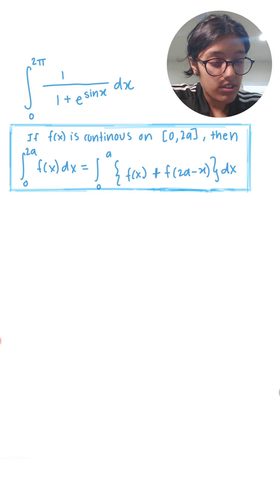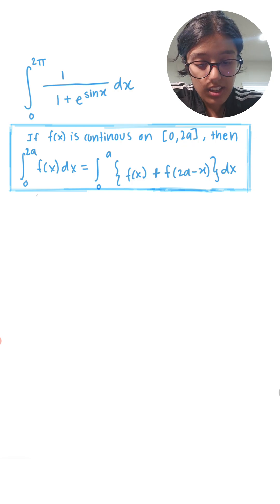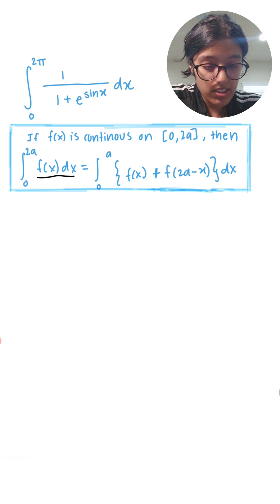So now let's move on to our formula. We have if f of x is continuous on 0 to 2a, in other words if f of x is continuous from its lower bound to its upper bound, then integration 0 to 2a of f of x dx is equal to integration of a, so not 2a but just a, of f of x which was our original function over here